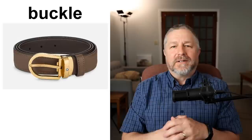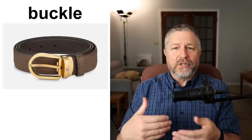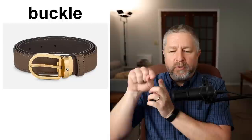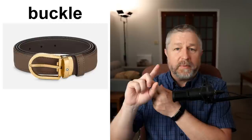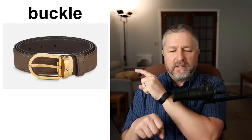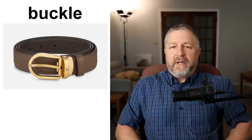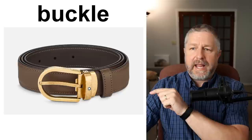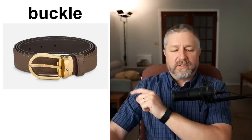Buckle. I wear a belt every day — to hold my pants up but also because I think it looks nice. A belt has a buckle — when you put your pants on you buckle your belt. The gold part on the front of the belt is called the buckle, and we might call it a belt buckle. The little brown loop part is called the belt loop.